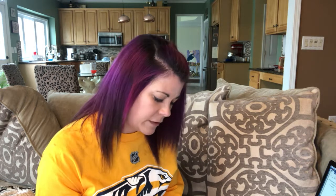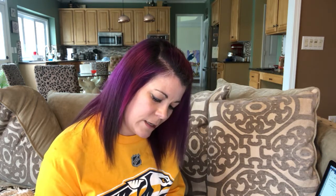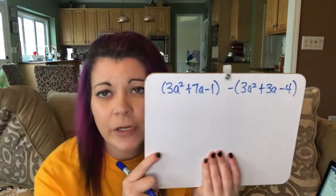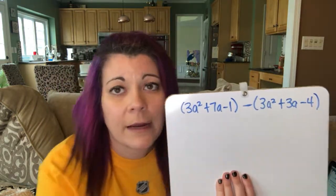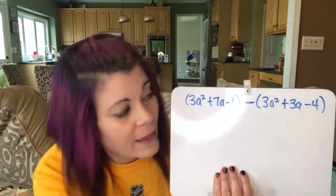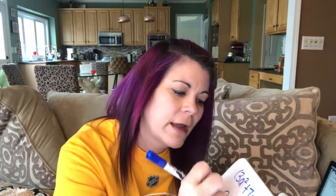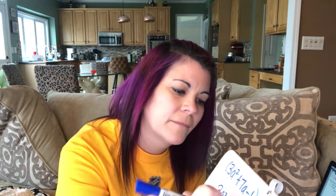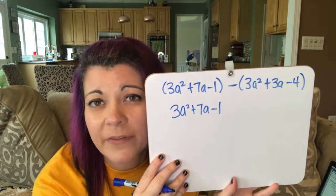Subtracting polynomials is a little bit more challenging, but not that much. So: 3a squared plus 7a minus 1, minus 3a squared. With subtraction of polynomials, we can't just drop the parentheses, because the subtraction sign means subtract this whole thing. The first set of parentheses you can just drop and rewrite: 3a squared plus 7a minus 1. The one behind the subtraction sign — you're going to take the opposite of everything in those parentheses.